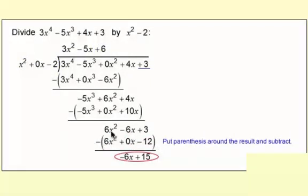Parentheses and subtract again. 6x² - 6x² is 0. -6x - 0x is -6x. And then 3 - (-12), that's 3 + 12, or 15. So our remainder is -6x + 15.